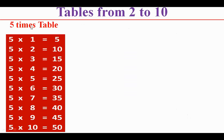5 times table: 5 1s are 5, 5 2s are 10, 5 3s are 15, 5 4s are 20, 5 5s are 25, 5 6s are 30, 5 7s are 35, 5 8s are 40, 5 9s are 45, 5 10s are 50.